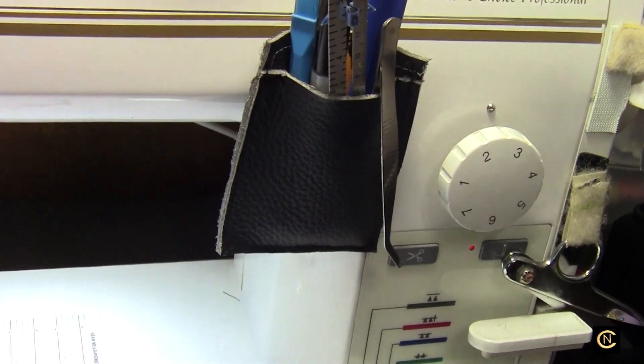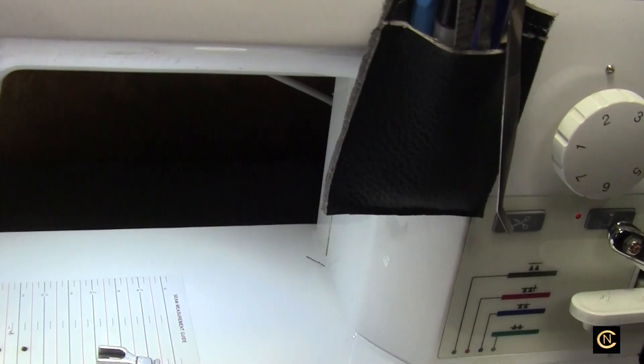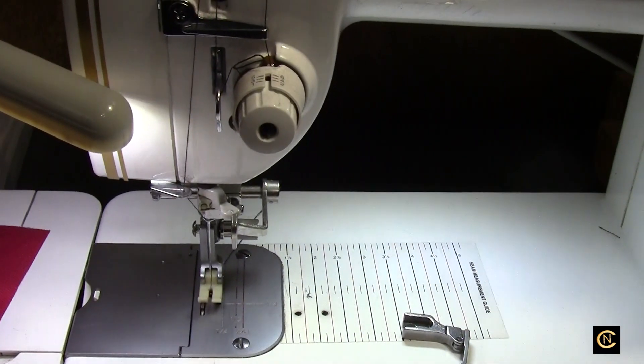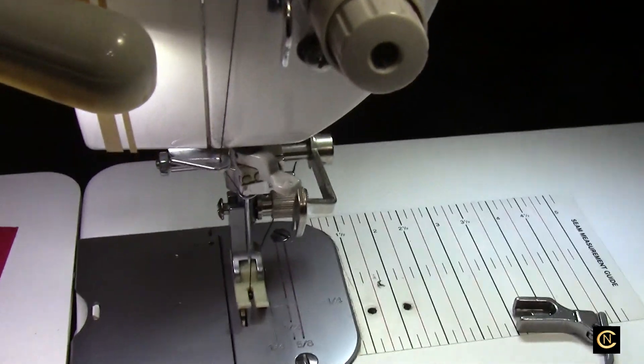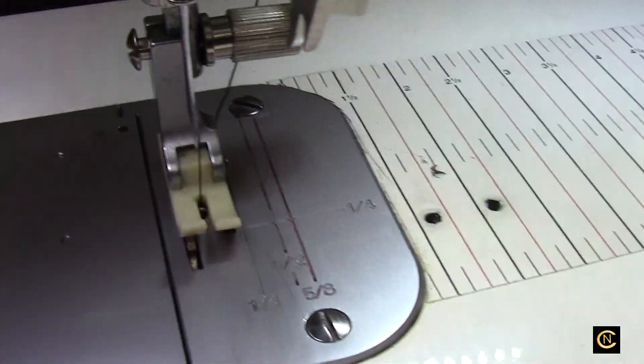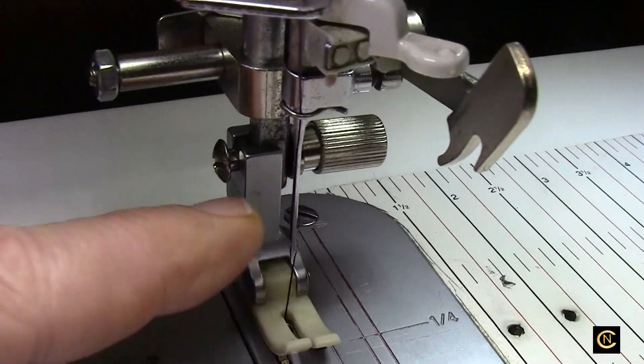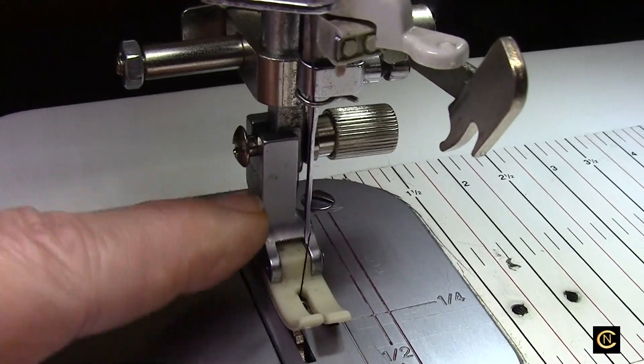They come in all different names—every few years they change the name. Baby Lock makes it, Brother makes it, all the other brands make one. It's a semi-industrial straight stitch machine. A lot of people I'm reading on groups are asking, 'Is there a way to change these presser feet? Is there like a snap-on adapter or something?'